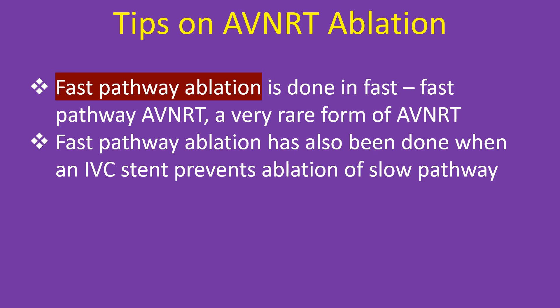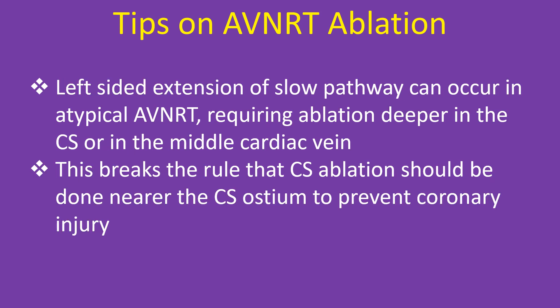Fast pathway ablation is done in fast-fast pathway AVNRT, a very rare form of AVNRT. It has also been performed when an IVC stent prevents ablation of the slow pathway. Left-sided extension of the slow pathway can occur in typical AVNRT, requiring ablation deeper in the coronary sinus or in the middle cardiac vein — breaking the usual rule that CS ablation should be near the CS ostium to prevent coronary injury.